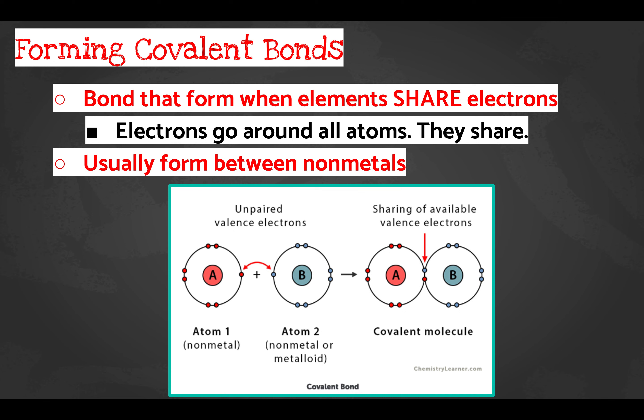Our other type of bond is the covalent bond. The prefix 'co' means share — think 'co-chair' sharing a responsibility. Covalent bonds form when elements share electrons, instead of one element giving electrons to another. Electrons go around all atoms that are sharing. These bonds usually form between non-metals — elements in the upper right part of the periodic table, like carbon, sulfur, oxygen, and nitrogen.